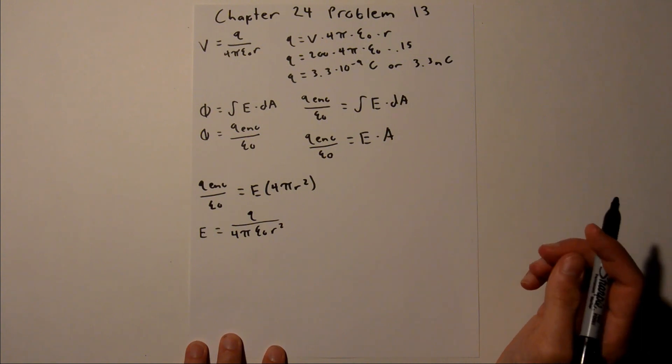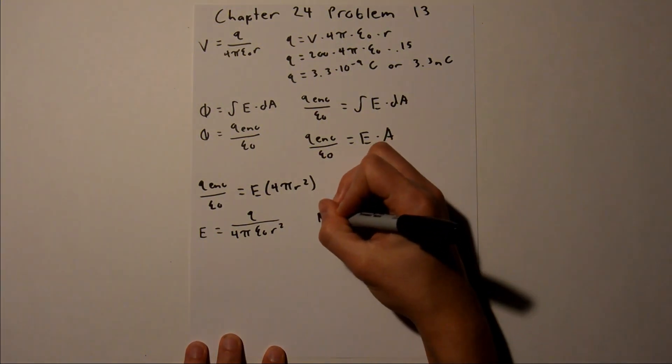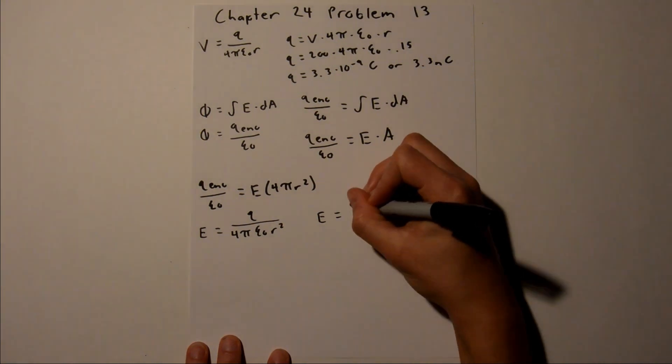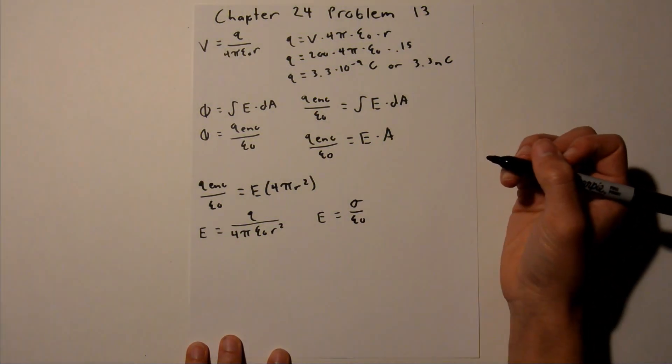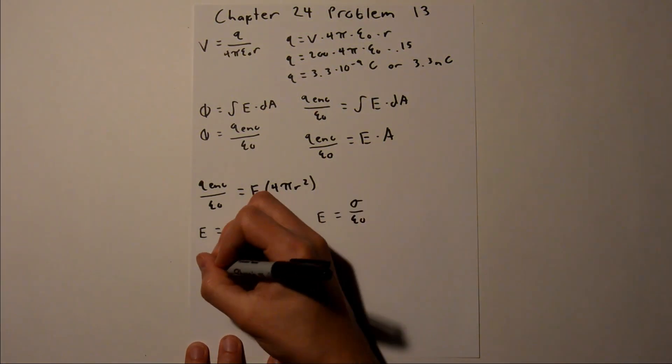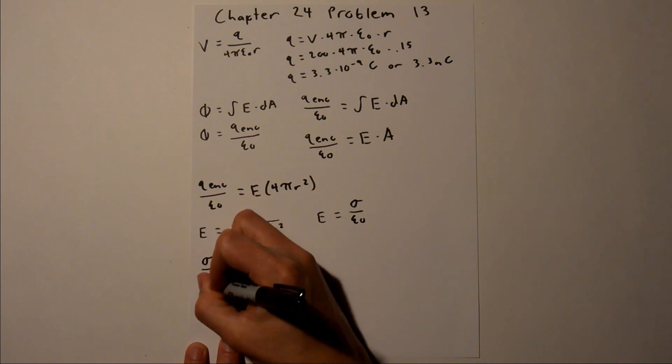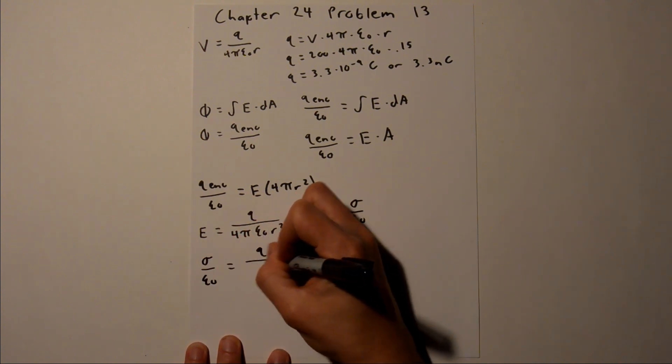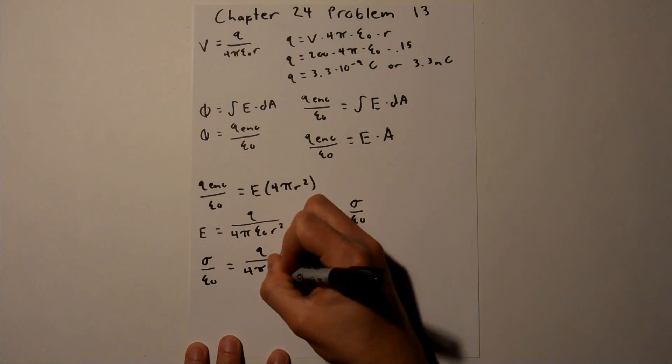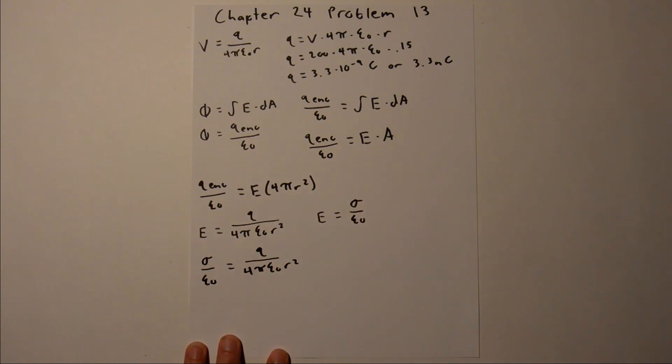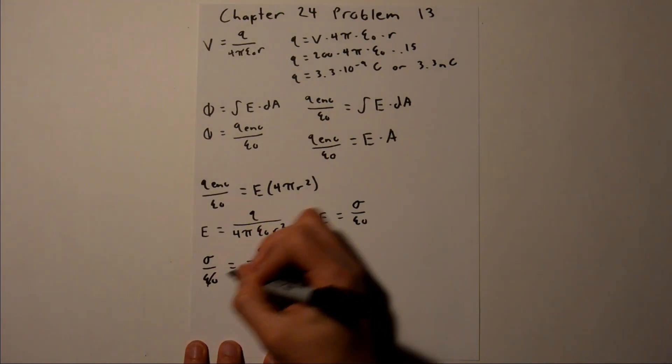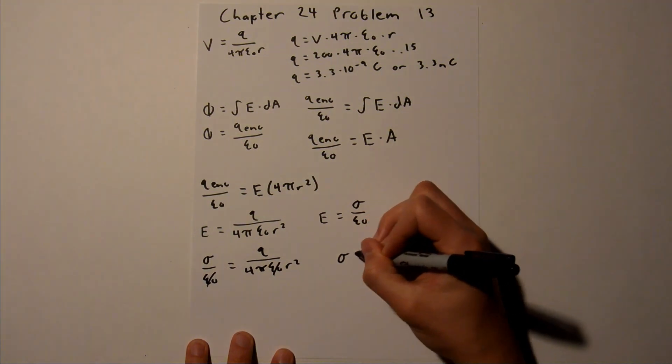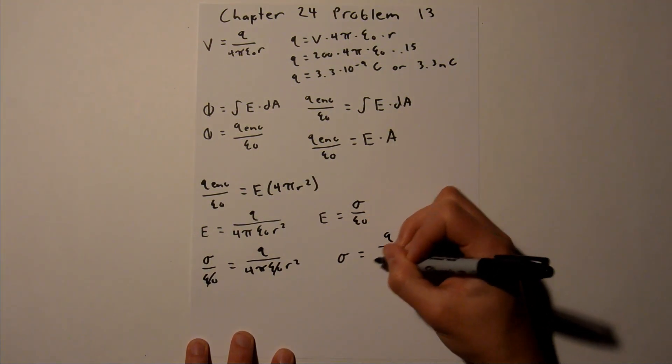And we also know that e, or the e field, is equal to sigma over epsilon sub 0, where sigma is the charge density. So we can set these two equal to each other, and say sigma over epsilon sub 0 is equal to q over 4 pi epsilon sub 0 r squared. And as you can see, we have an epsilon sub 0 in both denominators, so we can cross those out. And we are left with sigma is equal to q over 4 pi r squared.